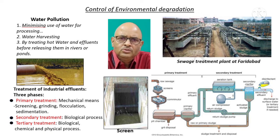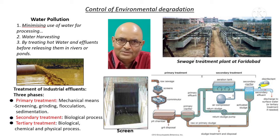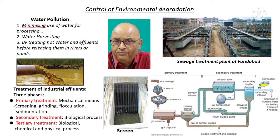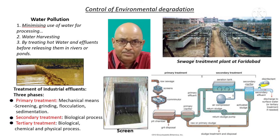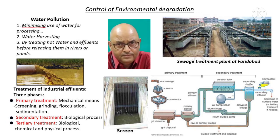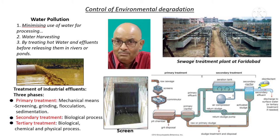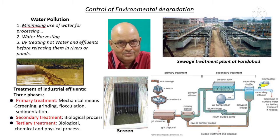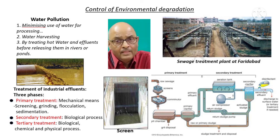After primary treatment, 50 to 70 percent of the suspended solids in wastewater is normally removed. Let us see the secondary treatment by biological process. In this stage, the material remaining after the primary treatment is treated biologically.